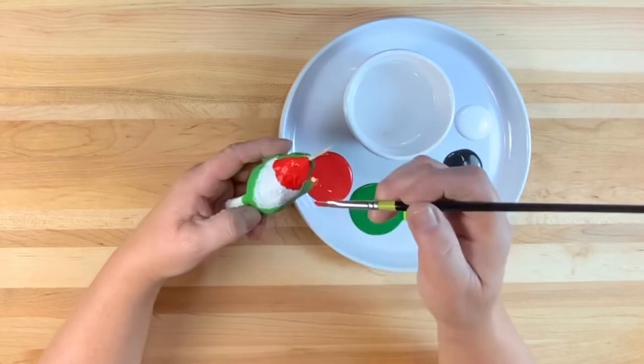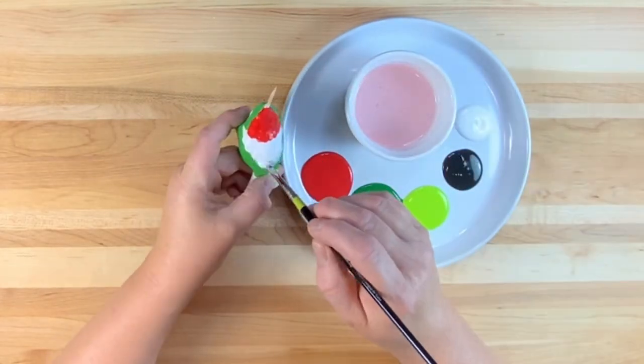Step seven, paint. Paint the hummingbird the desired color using acrylic paint.